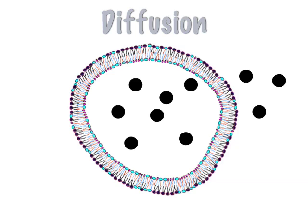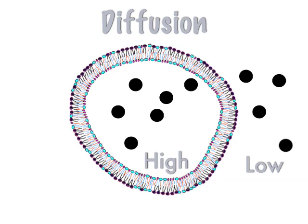Diffusion is very popular on the Regents. You have two different concentrations — high concentration means there's a bunch of stuff, and low concentration means there's less stuff. In diffusion, stuff will always move from high to low. So in this cell, the stuff will move out. How many? Two will move out, because you have to reach what's called equilibrium, so both sides will have five and five.